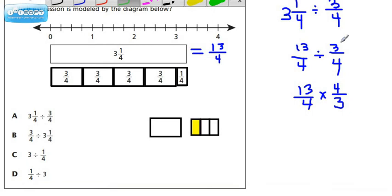If we were going to go through the algorithm for choice A, we would do keep, change, flip. Keep the 13 fourths, change this to multiplication, and change the divisor to its reciprocal. And we might even cross-reduce by dividing by the GCF of a numerator and denominator, which in this case is 4, and get 1 here and 1 here. Can't do anything going this way. The GCF of these two numbers is 1.